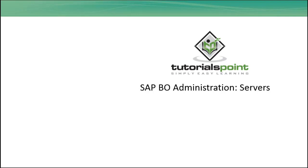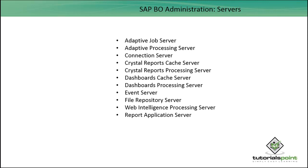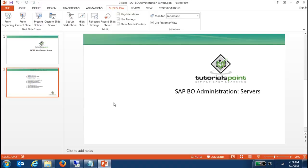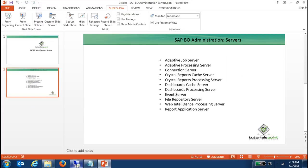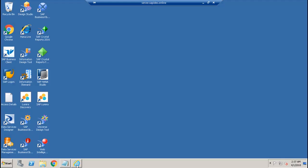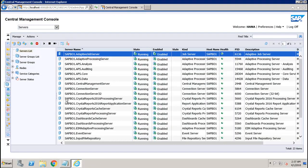Hello friends, welcome to Tutorials Point. In this tutorial we will discuss the different servers in the Business Objects platform in some detail. These are the important servers which we have in the Business Objects platform, including the Adaptive Server, which has the Job and Processing Server, then the Connection Server, Crystal Reports, Dashboards, web servers, and other servers. Let's go to the system and see how and when these servers are used by navigating to the CMC and Servers.